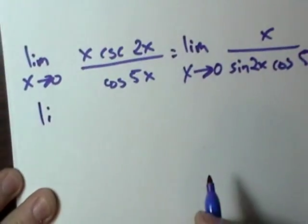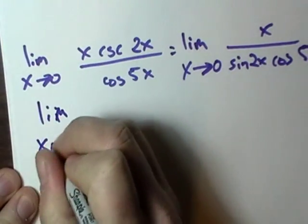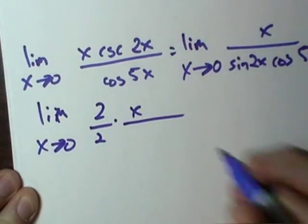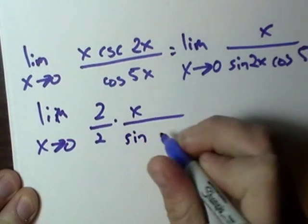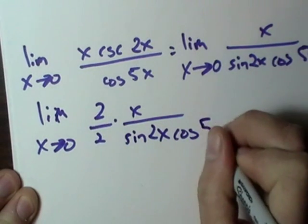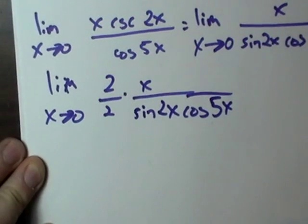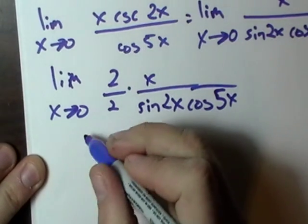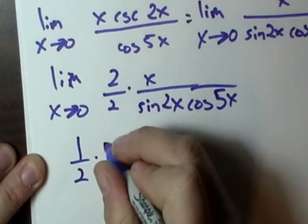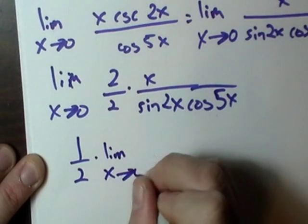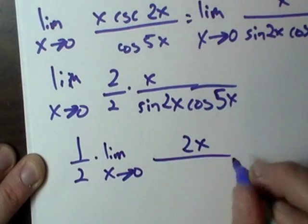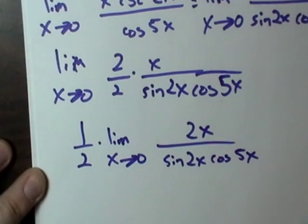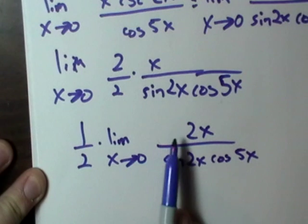I'm going to go limit as x goes to zero of two over two times x over sine two x cosine five x. That looks kind of weird. Now, I'm going to pull this two out, but it's going to be a one half. So, I'm going to end up with a one half times the limit as x goes to zero of two x over sine two x cosine five x. See what I did? I just pulled the two out. It's over here. I mean, it's still there.